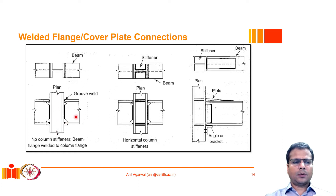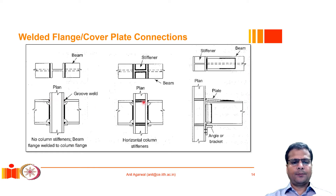This is basically a column supporting two beams, one on either side, and this is the top view of the same connection. The web of the beam is fillet welded to the column, and the flanges are groove welded to the column. In this diagram, there are no continuity plates or horizontal stiffeners in the column, but sometimes they may be required depending on local stresses in the column web and shear stress requirements.